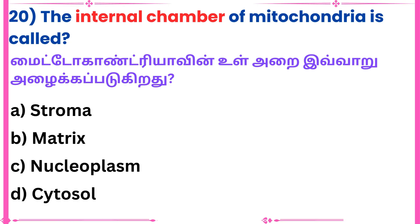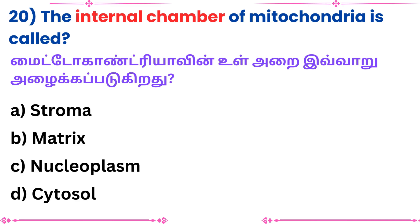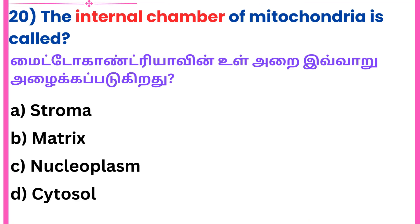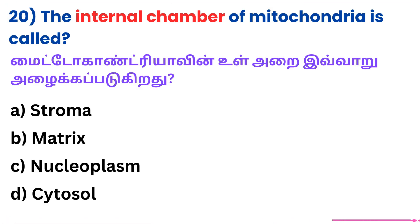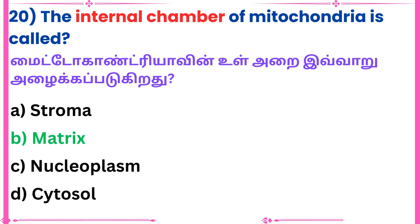Twentieth question: The internal chamber of mitochondria is called dash. Answer: Matrix.